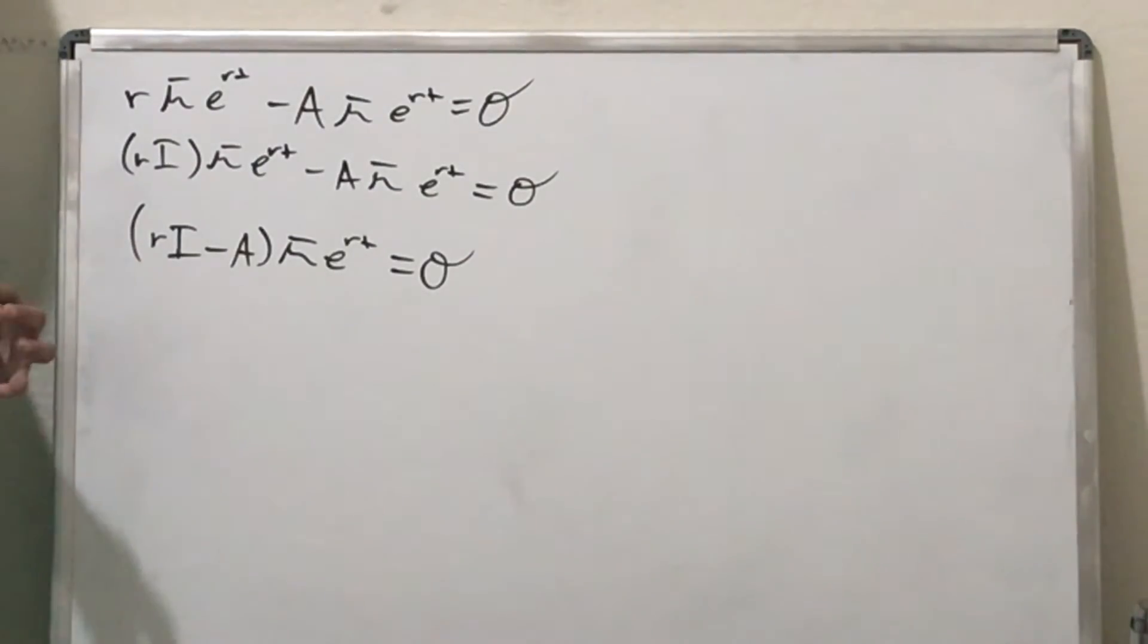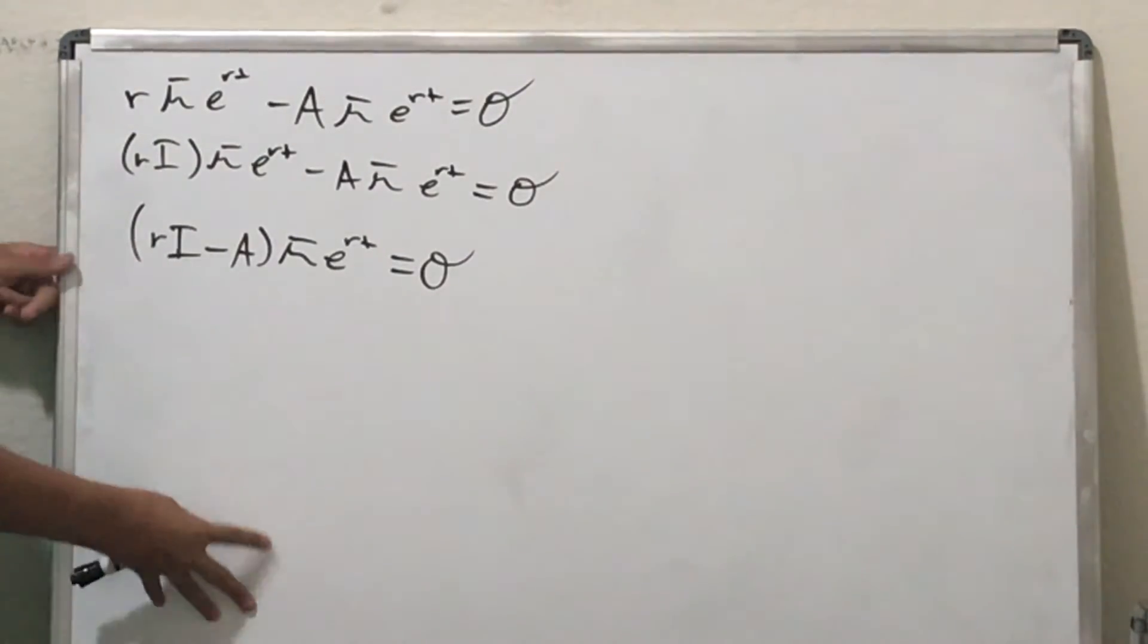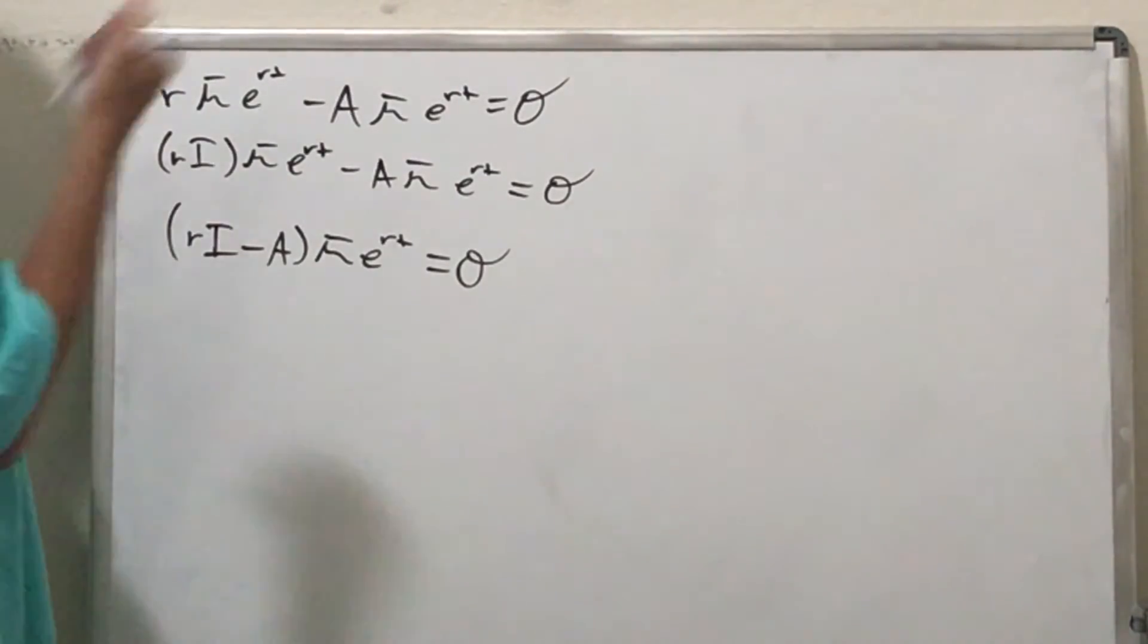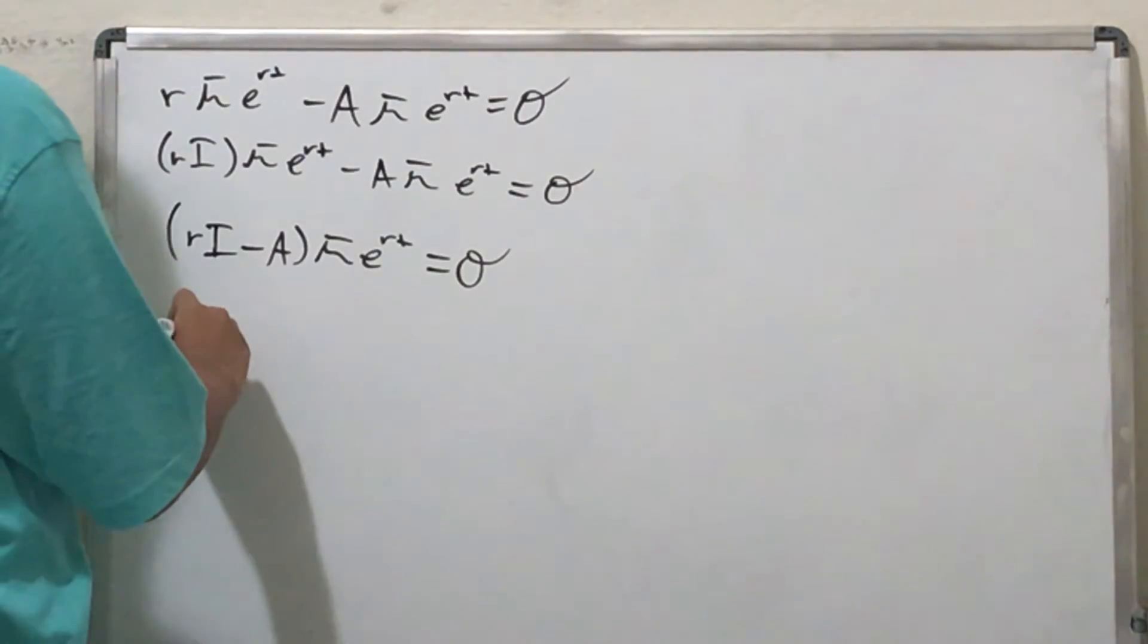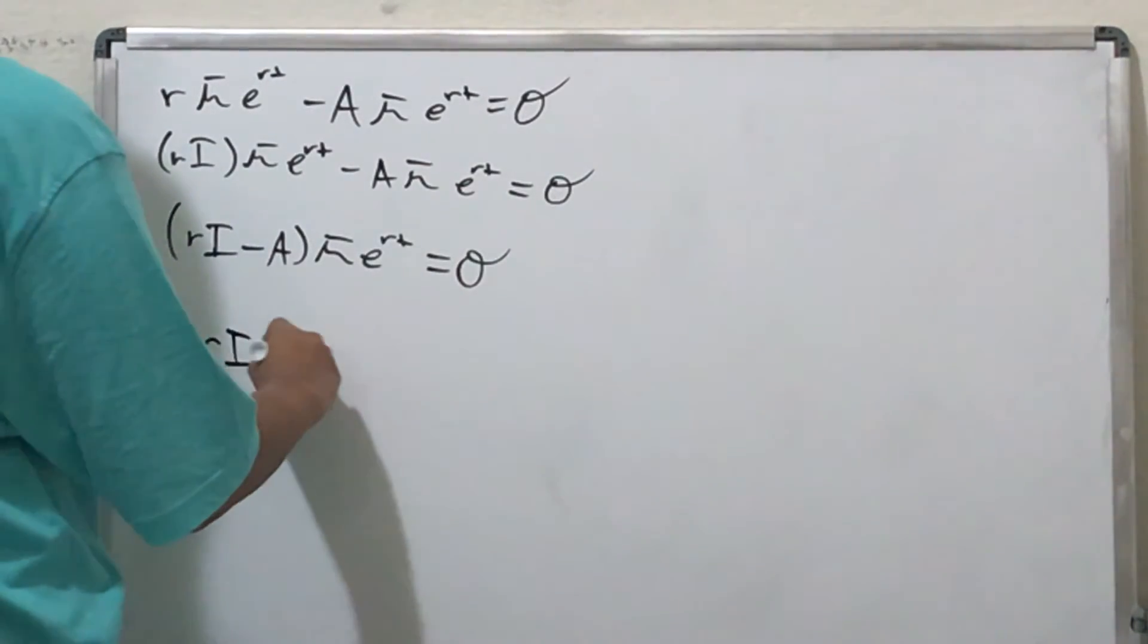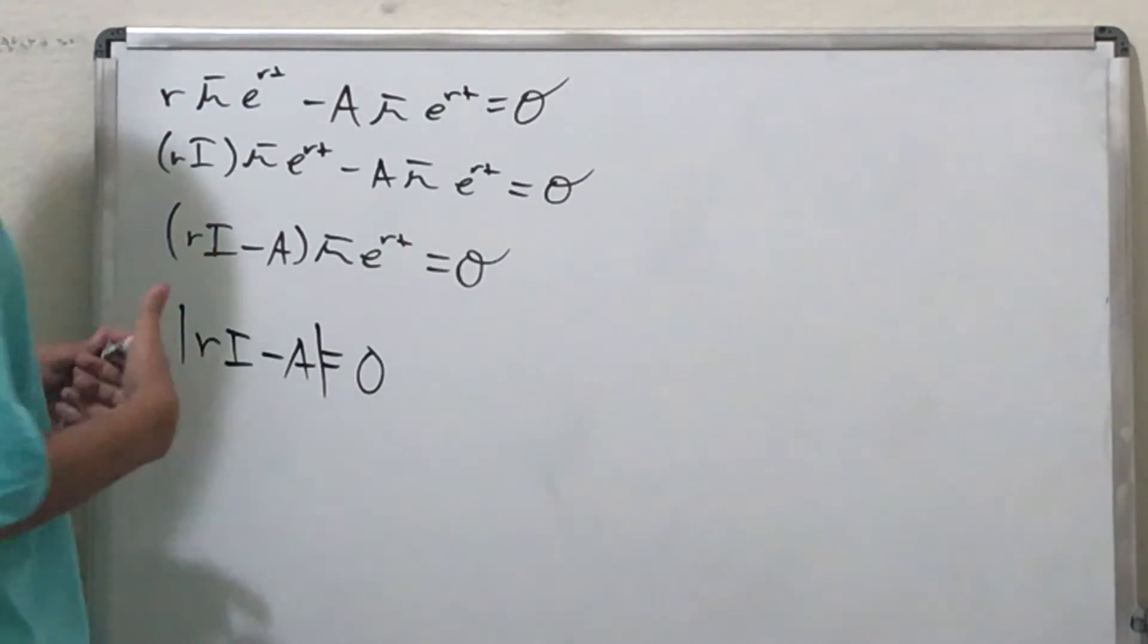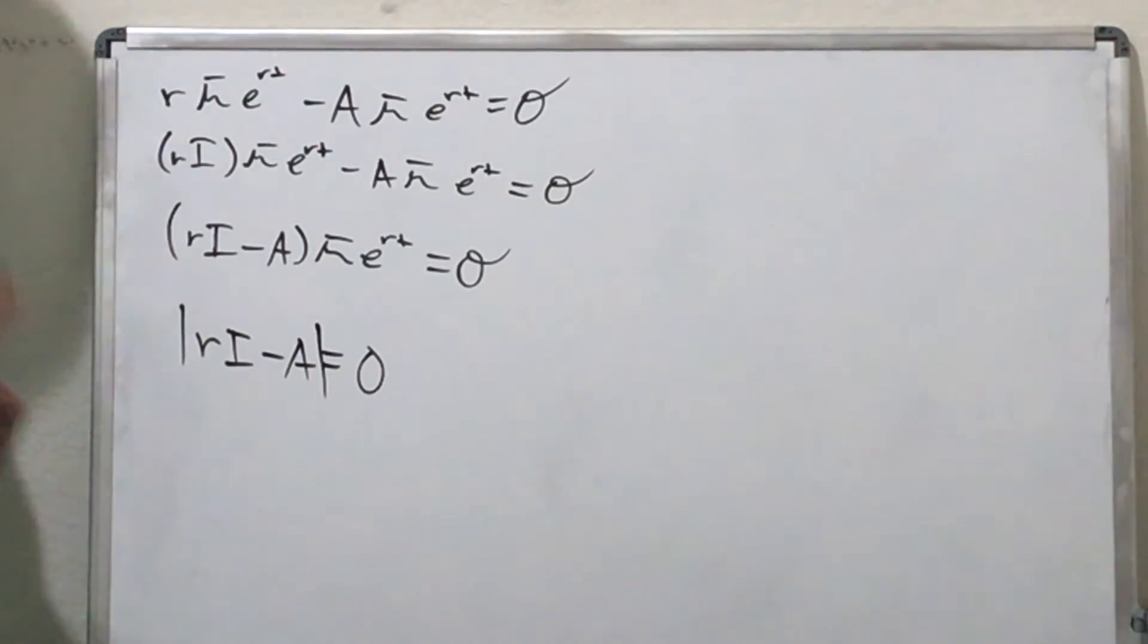So you see we've gotten it down to here. And this may look very familiar, because this is the form that you use to find your eigenvectors and your eigenvalues. So for a non-zero vector, the determinant of rI minus A is zero, and we can go on from there.